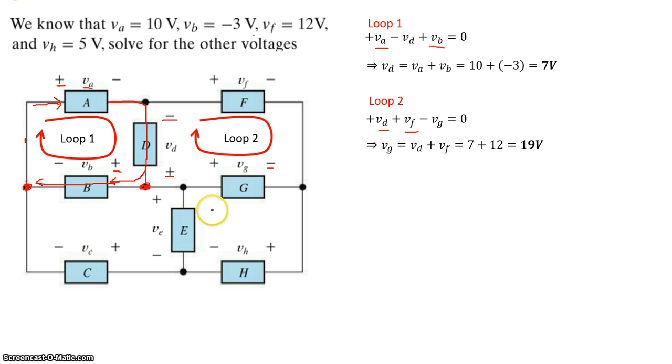Let's take a look at loop number three. Loop three will consist of elements E, G, and H. Let's start again at a particular point in the loop.